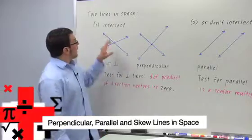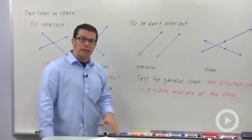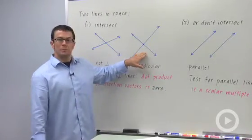Two lines in space either intersect or they don't intersect. Now if they do intersect, they might just intersect like this or they might actually be perpendicular.